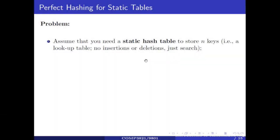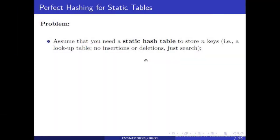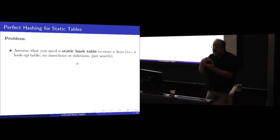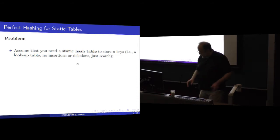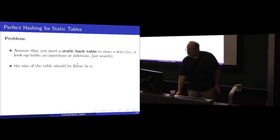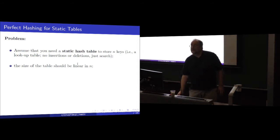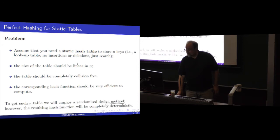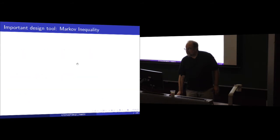The hashing we are going to show is fully deterministic — the hash function will be fully deterministic — but the method of choosing parameters to get it to work as it should is randomized. This will be a static hash table, essentially a lookup table. For example, if you are building a compiler, it's essentially any kind of lookup table, and the point is that the table has to be completely collision-free. The hash function has to be extremely easy and fast to calculate. So how do we go about that? We want the table to be of reasonable size — namely a small multiple of n — and it should be completely collision-free, and the hash function should be very efficient to compute.